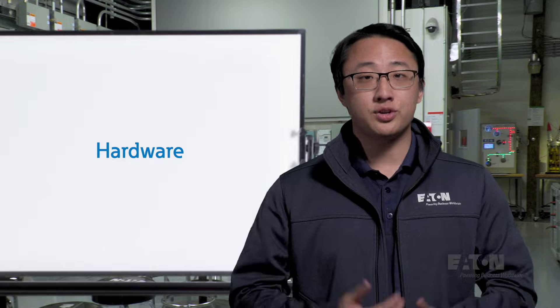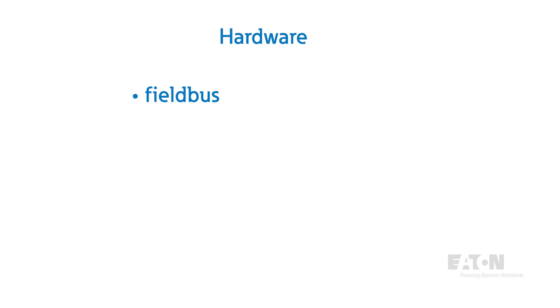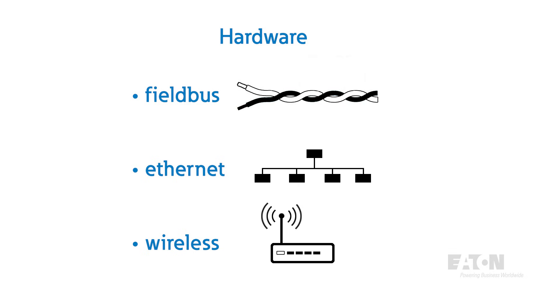There are three main hardware methods that communication protocols use to transmit data: Fieldbus, Ethernet, and Wireless. Protocols in each category share similar characteristics. Fieldbus protocols talk over a shared communication bus, Ethernet protocols are generally carried out across much wider networks, and wireless communications operate via transceivers.